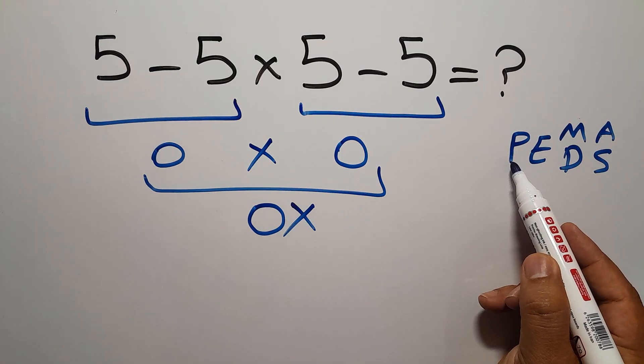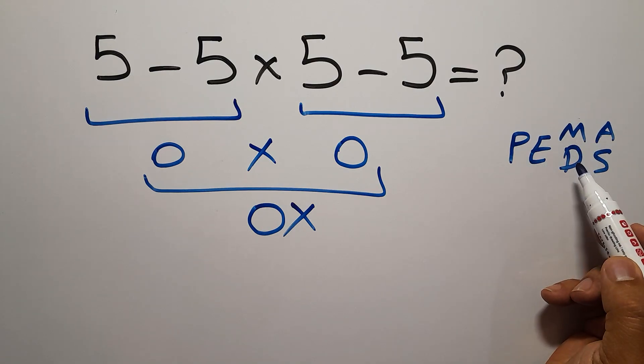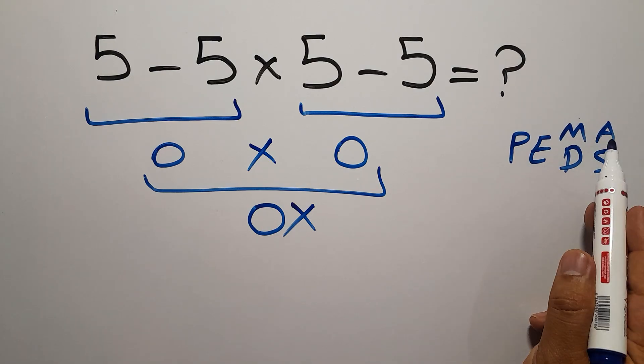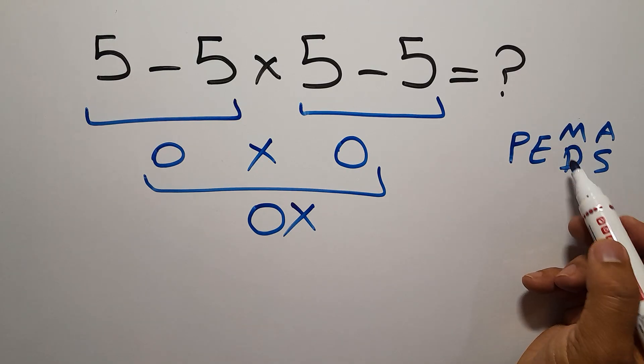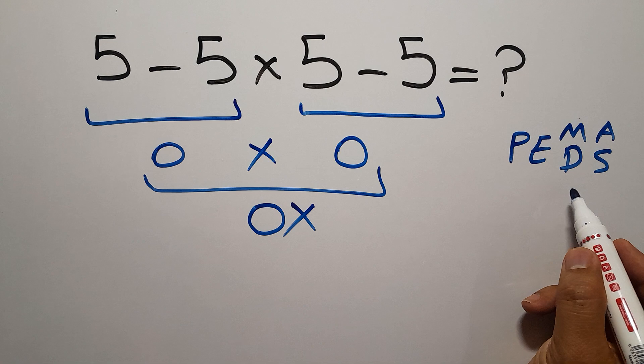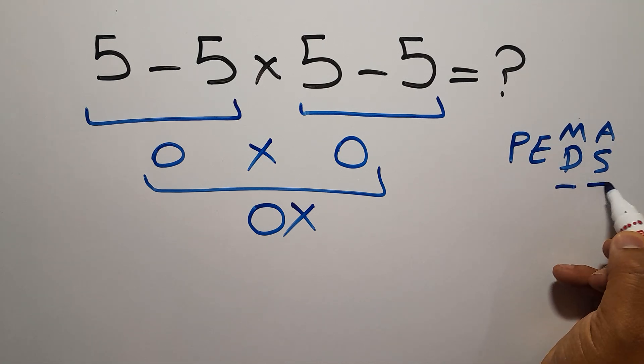We first do parentheses, then exponents, then multiplication or division, and finally addition or subtraction. Remember that multiplication and division have equal priority and we have to work from left to right. And the same applies to addition and subtraction.